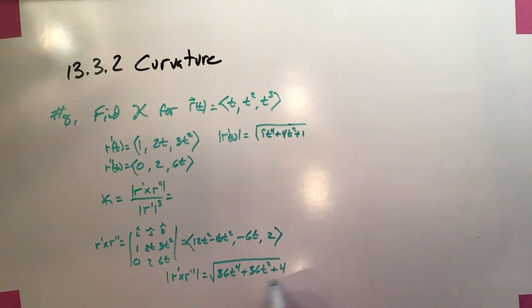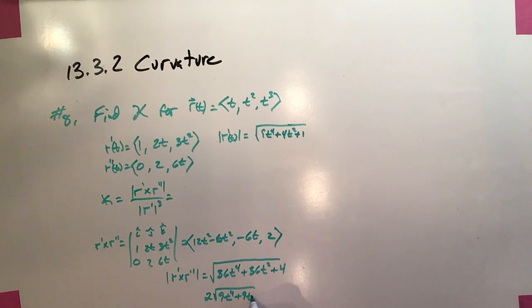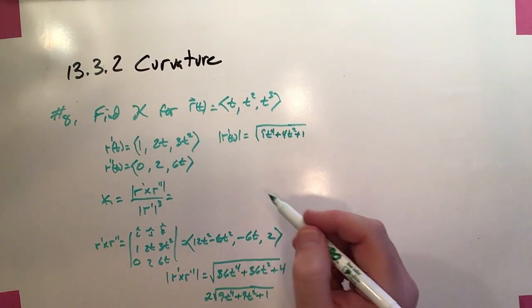That whole thing will be under the square root, which means we can factor out a factor of 4. It'll be 4 times all 3 of these. 4 times 9 is 36, so it'll be 2 times the square root of 9t to the fourth plus 9t squared plus 1.